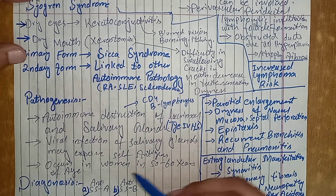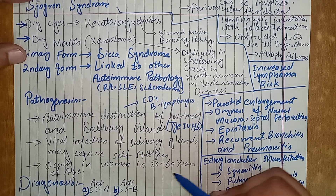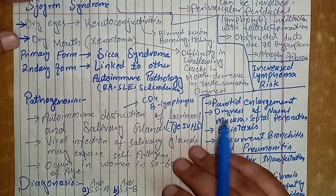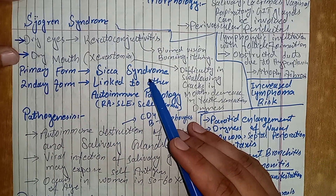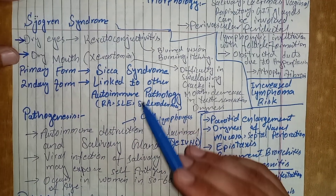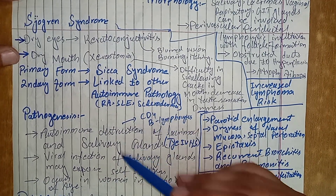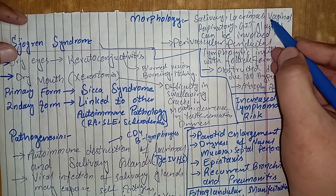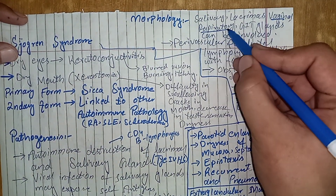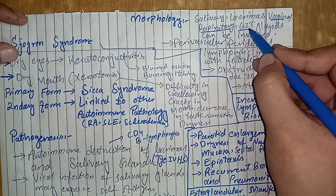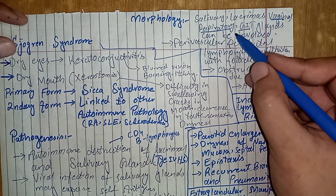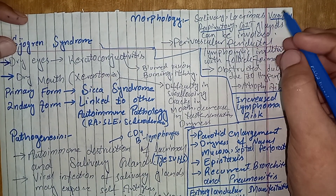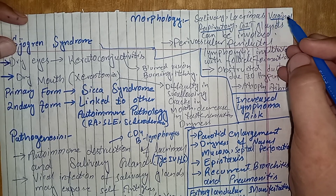It mostly occurs in women in their 50s or 60s. In addition to the salivary glands and lacrimal glands, this disease can also attack the glands in the respiratory tract or GI tract, and can cause respiratory as well as gastrointestinal symptoms.